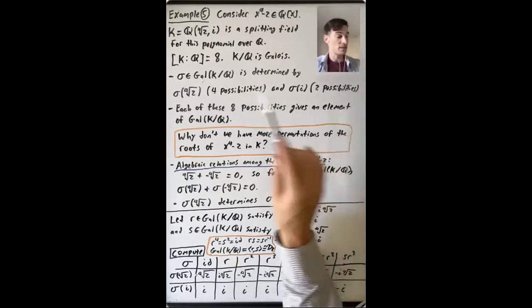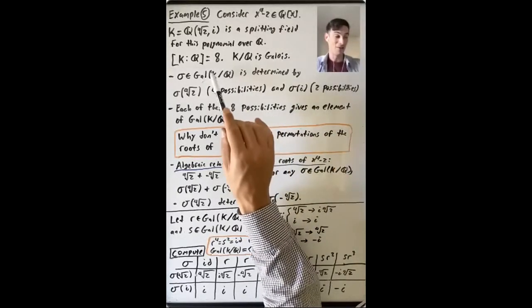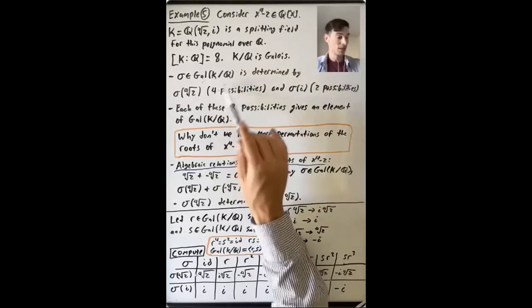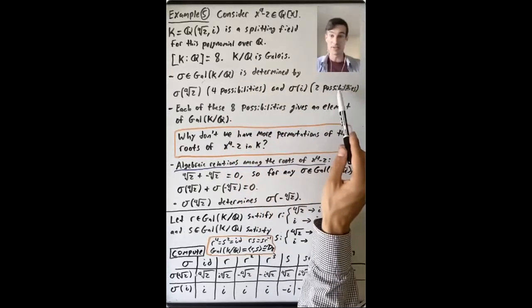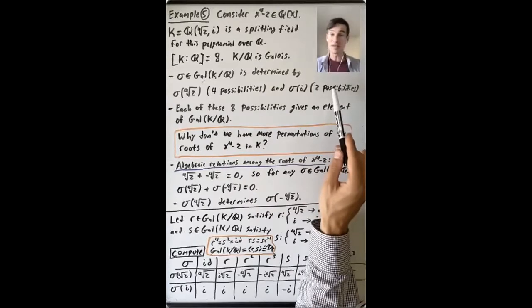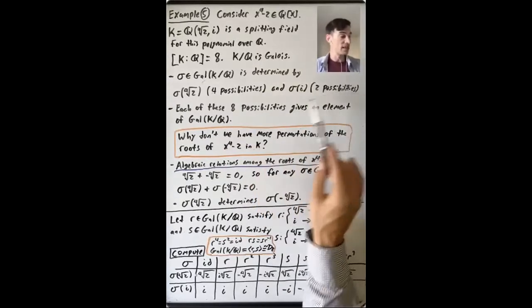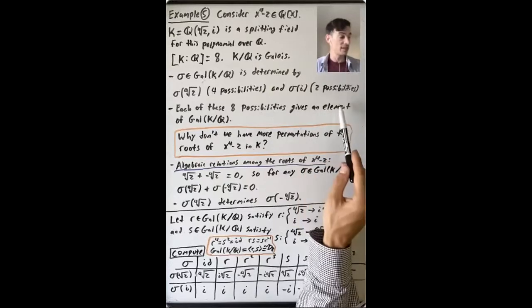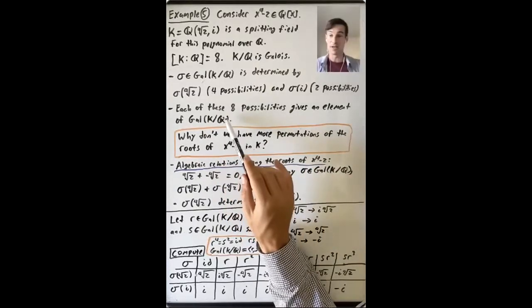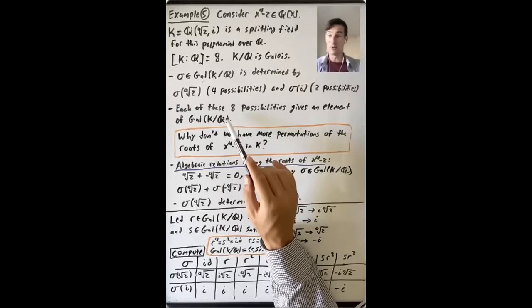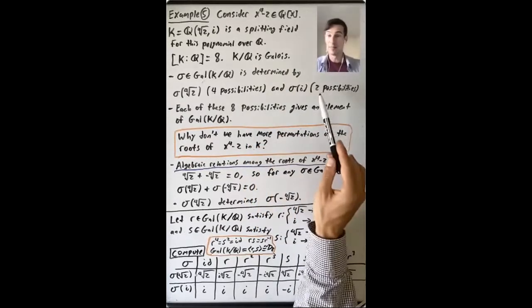So we're seeing that there are at most eight elements of the Galois group of K over Q — four choices for where to send the fourth root of two, and two choices for where to send i. But we know there are exactly eight elements of this Galois group. So every one of these eight choices gives an element of the Galois group of K over Q, and every element comes from one of these eight possibilities.